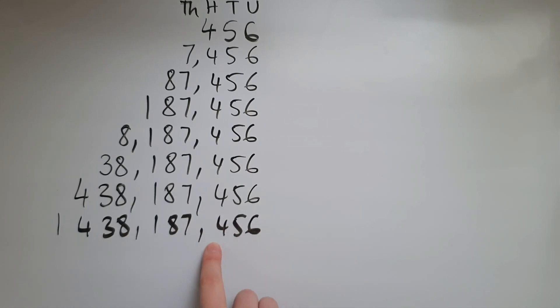So 1, 2, 3, comma, 1, 2, 3, comma, to help us read them. So these were the millions. Now we're looking at the billions. So 1,438,187,456.